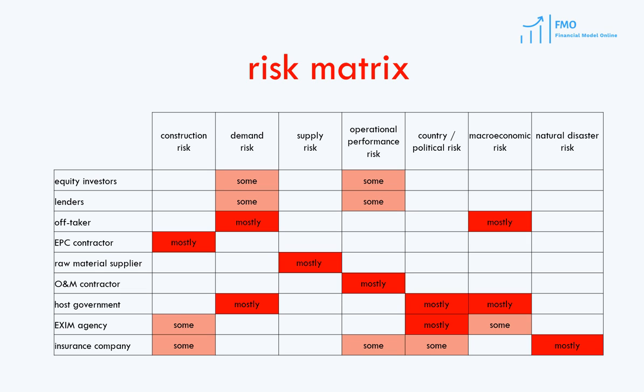You can see, for example, that the construction risk is mostly taken by the EPC contractor, revenue risk is mostly taken by the off-taker, and so on. In a perfect world, we would allocate each risk in the project to the party most capable of handling it, which would allow significant reduction of the financing cost of the project and would eventually translate into a benefit for end-users of the product or service. However, in the real world, there are many shortcomings in risk analysis and risk allocation, which sometimes result in project failures.